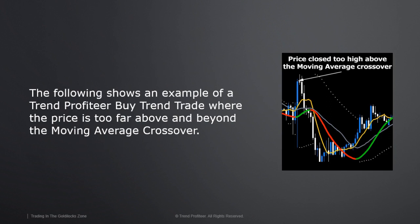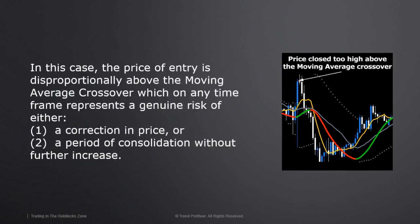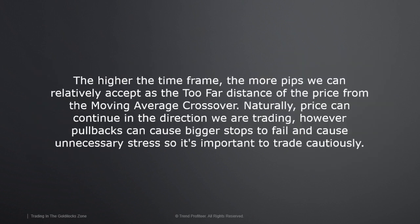In summary, if price looks like it's struggling to move in the intended direction, or if the horse has already bolted — a very large price move has already happened in the intended direction — it's best that you proceed with caution. The following shows an example of a Trend Profiteer buy trend trade where the price is too far above and beyond the moving average crossover. You can get some much bigger ones than this, but it depends on the time frame. In this example, the move up closed way above the moving average crossover.